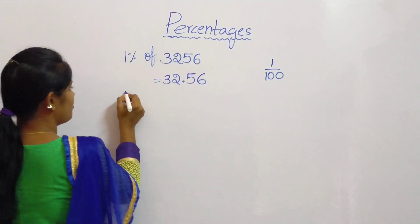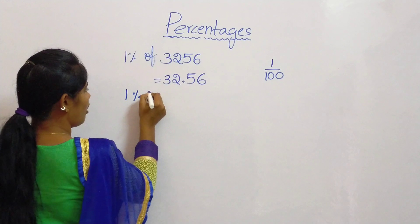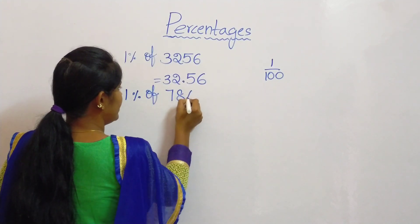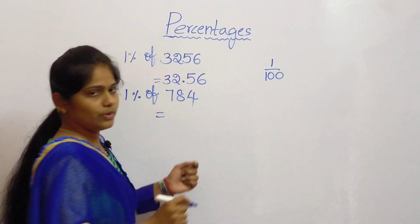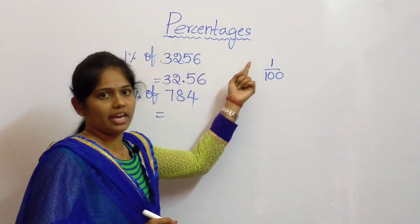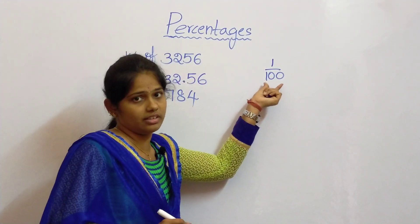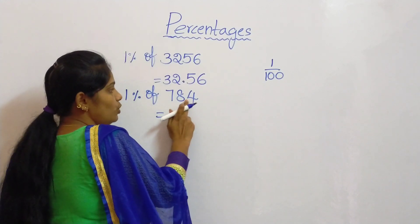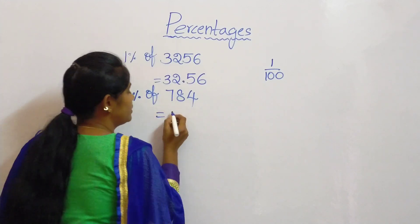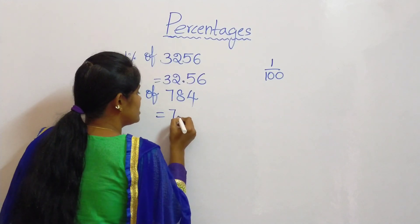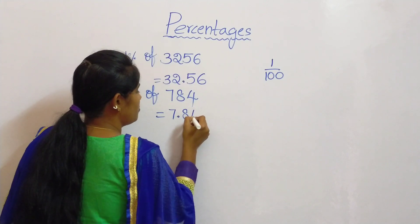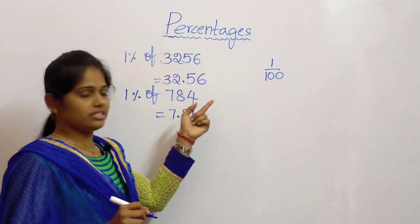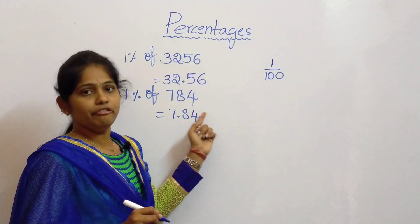The next example: 1 percentage of 784. As we know, 1 percentage means 1 by 100 — it has 2 zeros in the denominator. So after 2 digits, put the decimal point. So it is 7.84. 1 percentage of 784 is 7.84.